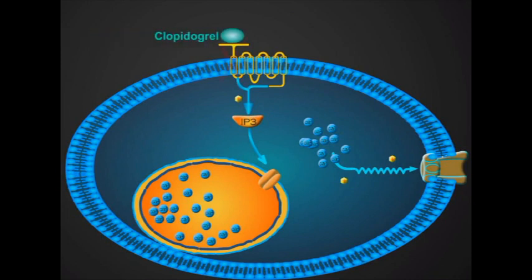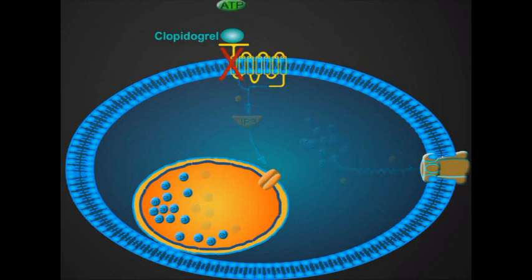Clopidogrel, which is a platelet aggregation inhibitor, irreversibly inhibits the binding of ATP to its receptors. Thus, the sequestered calcium ions will not be released.